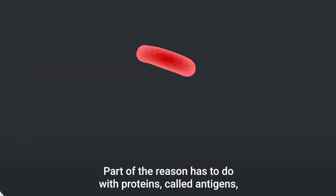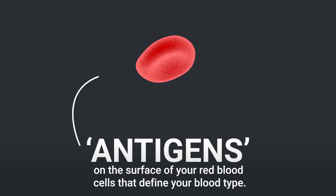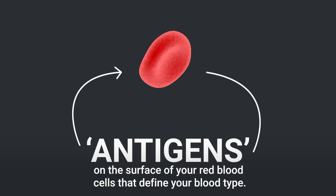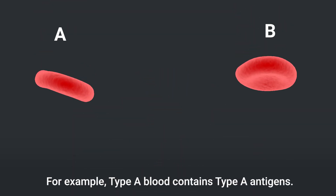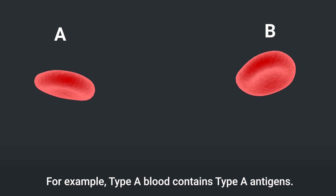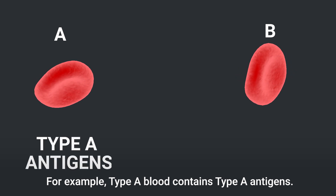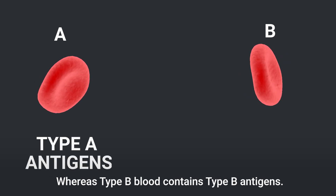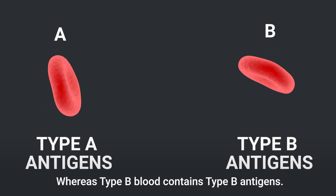Part of the reason has to do with proteins called antigens on the surface of your red blood cells that define your blood type. For example, type A blood contains type A antigens, whereas type B blood contains type B antigens.